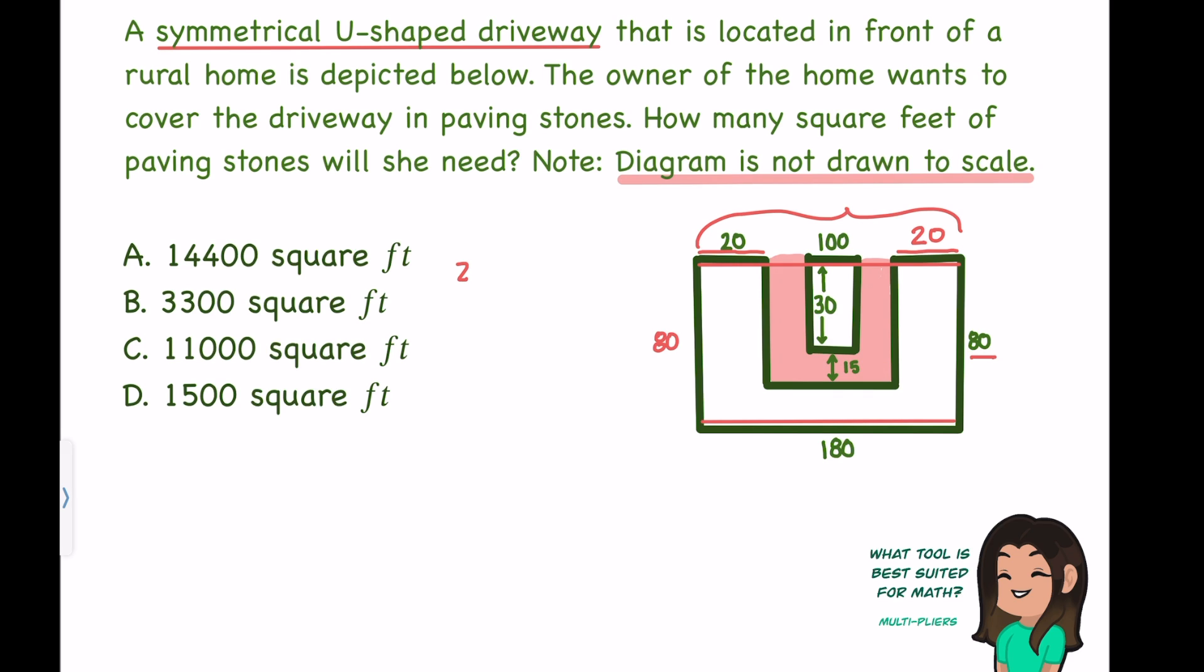Right now, 20 plus 100 plus 20 does not equal 180. In fact, 20 plus 100 plus 20 equals 140, which doesn't make sense because the entire length should equal 180. If I take 180 and minus that 140, I'll know what I'm missing.